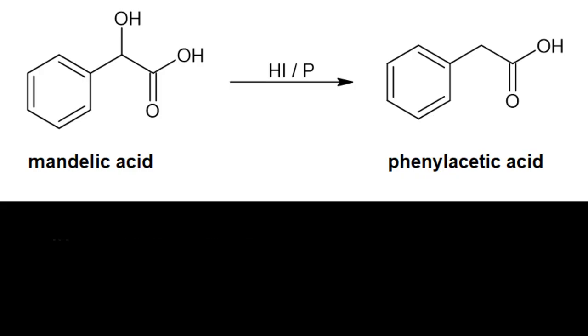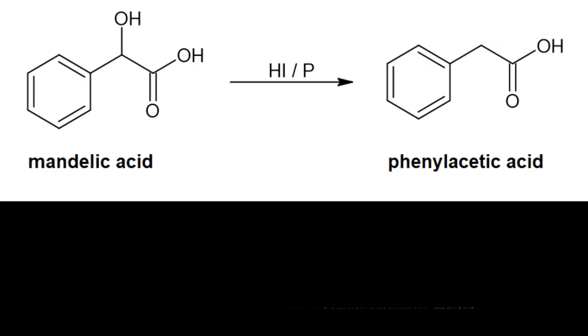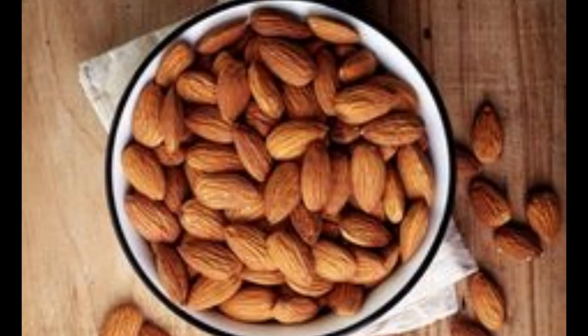In this operation, we will obtain phenylacetic acid by eliminating the hydroxyl group from mandelic acid with phosphorus and hydroiodic acid. Mandelic acid is a hydroxyl acid obtained from almonds. It is easily available and cheap.